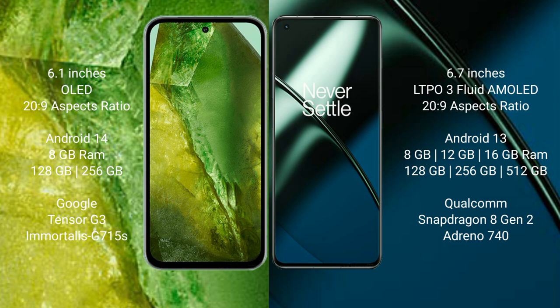OnePlus 11 comes with 8GB, 12GB, or 16GB RAM, and 128GB, 256GB, or 512GB internal storage, with a Qualcomm Snapdragon 8 Gen 2 processor and Adreno 740 GPU.